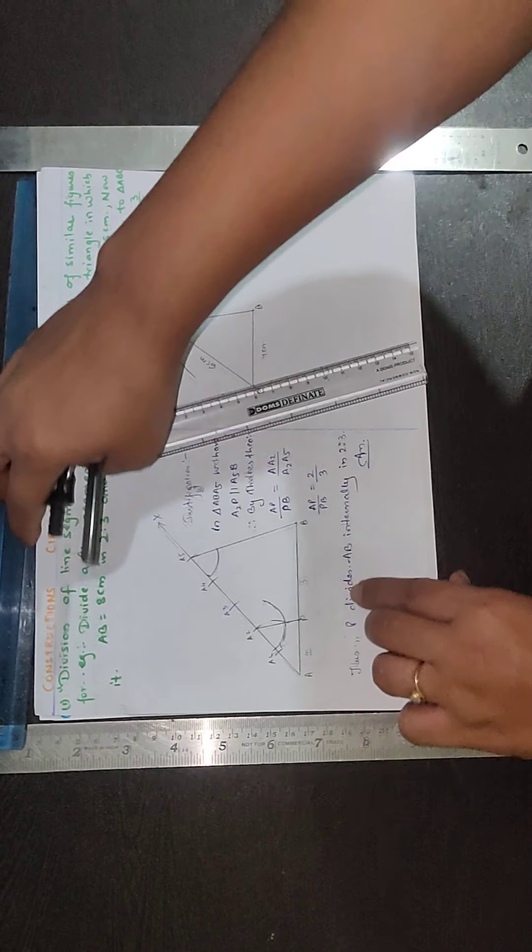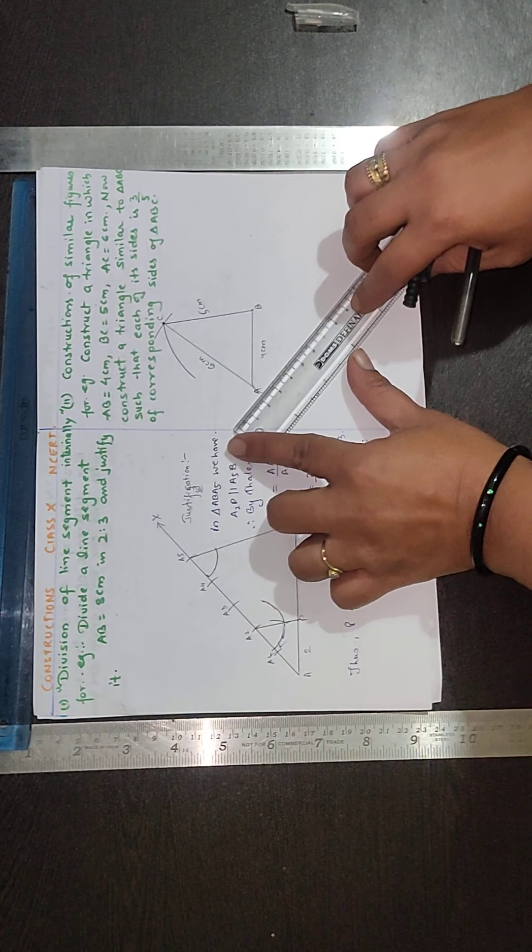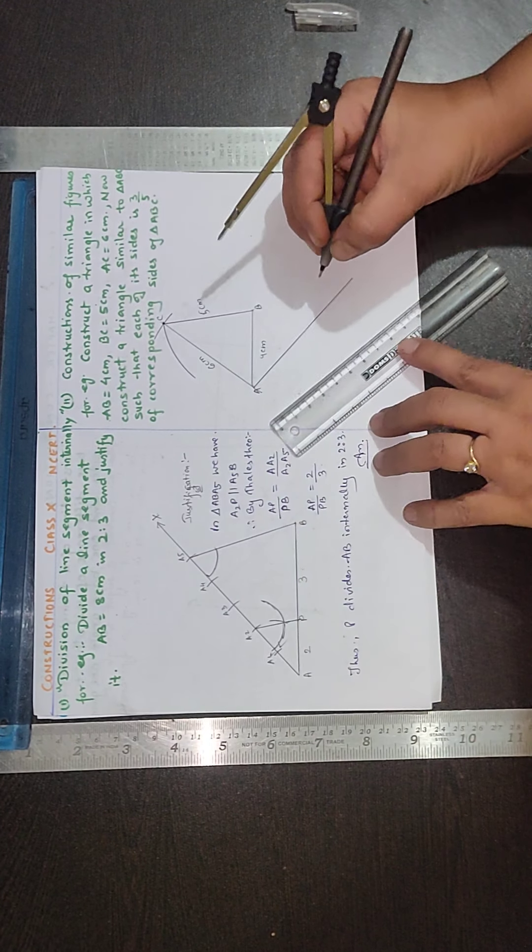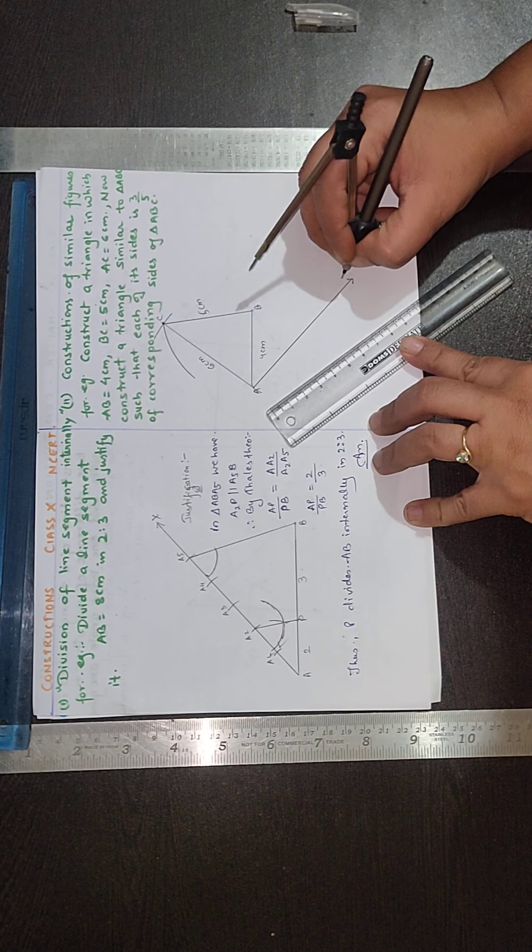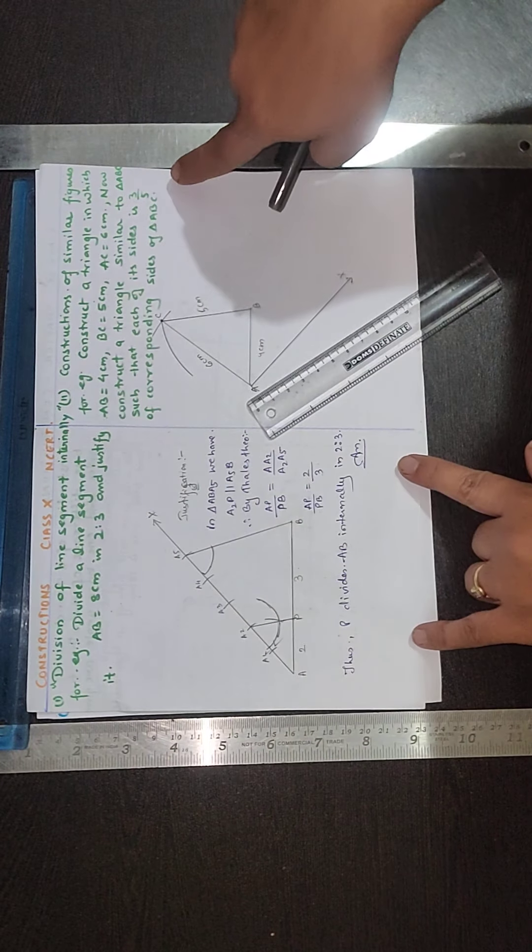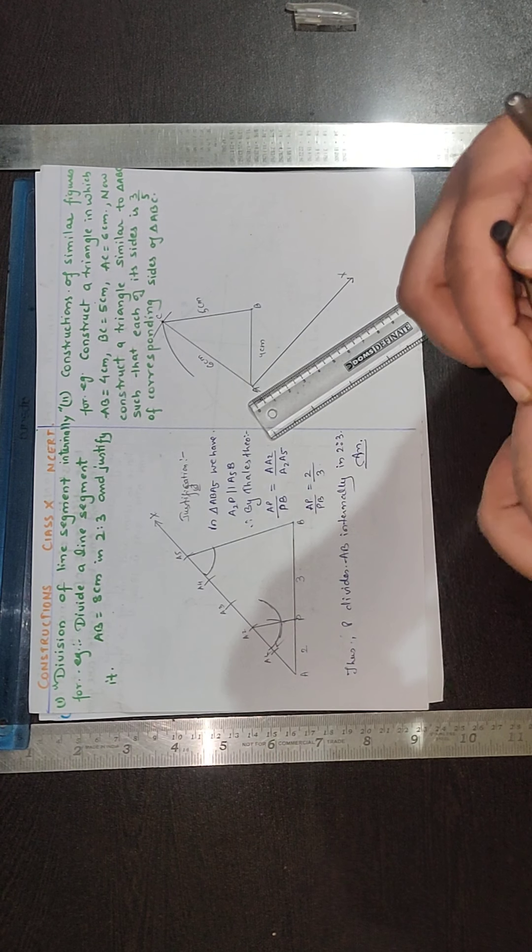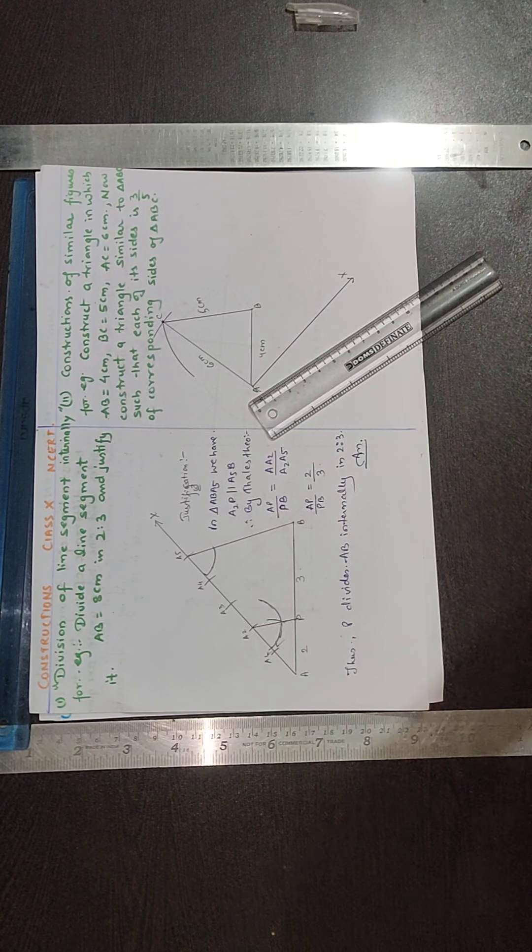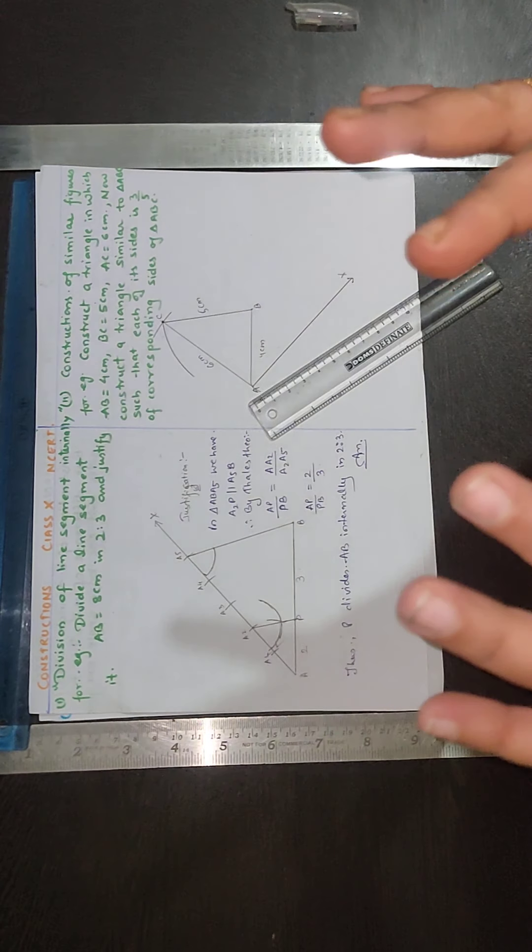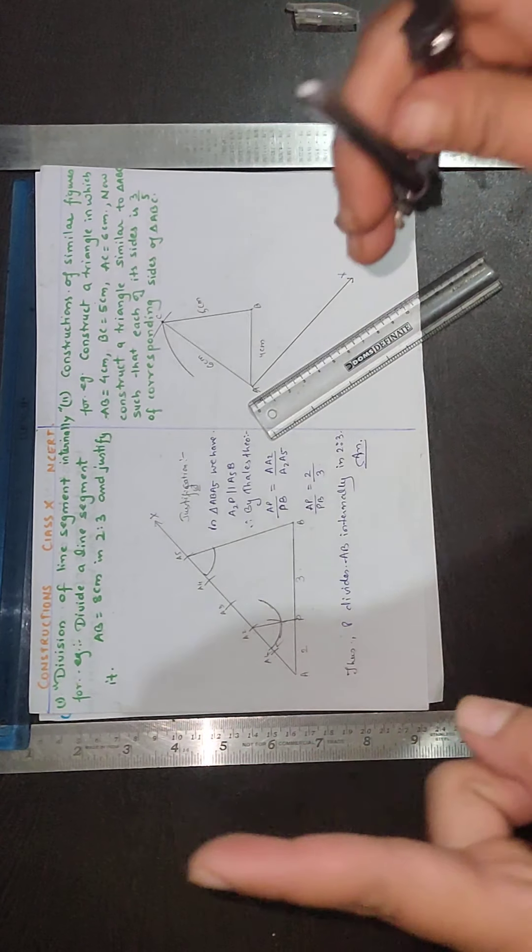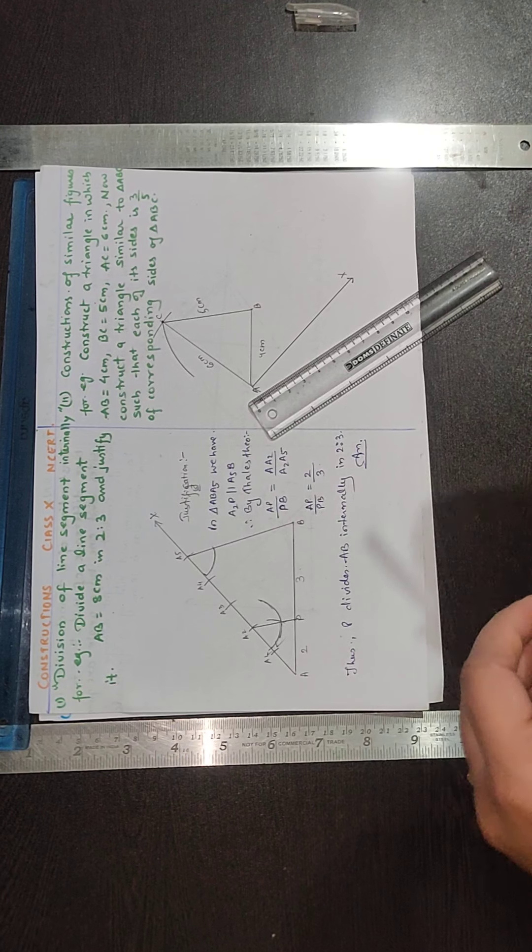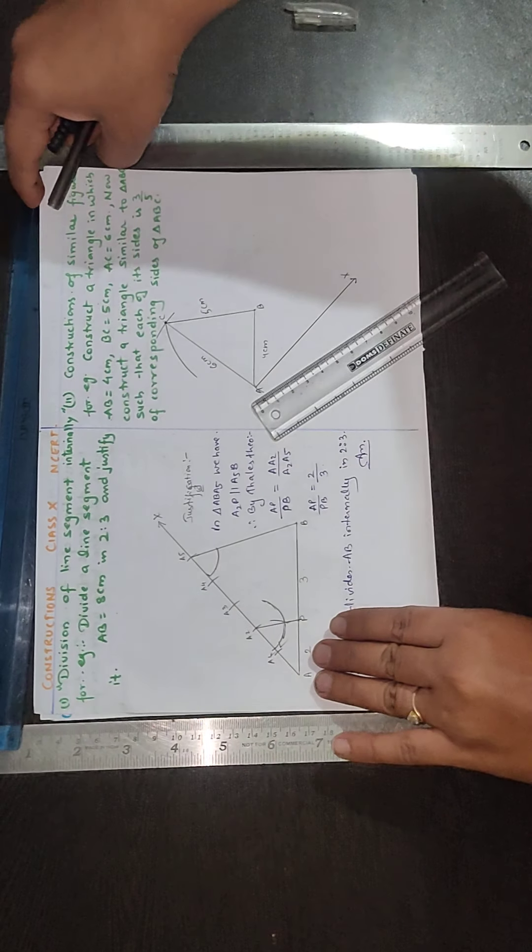Then below AB we need to draw an acute angle, any acute angle, and mark it as X. Then we need to find out the corresponding size like 3 to 5. Maximum of 6 and 5, 3 is 5 only. That is the reason why we are marking 5 equal points.